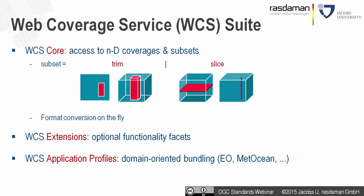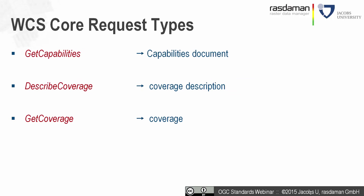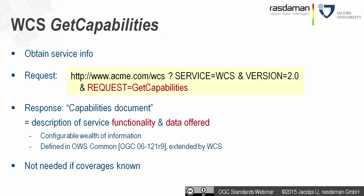WCS core actually supports three request types. Over the web, you can send a GetCapabilities request and get back a capabilities document informing about service qualities. You can send a DescribeCoverage request that gives you a coverage description. Or you can send a GetCoverage request — the central workhorse of WCS — which gives you a coverage back.